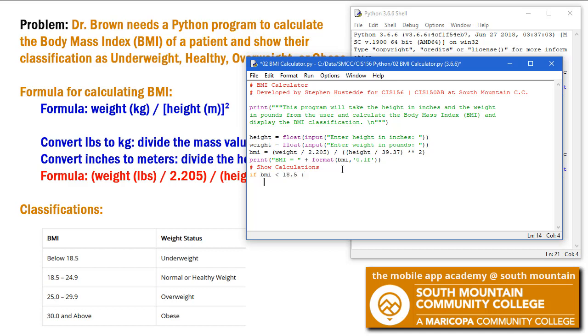we will print out the classification equals underweight. And then we'll do an elif. And here I'm going to say if BMI is less than or equal to 24.9, and we will print out classification equals healthy weight.